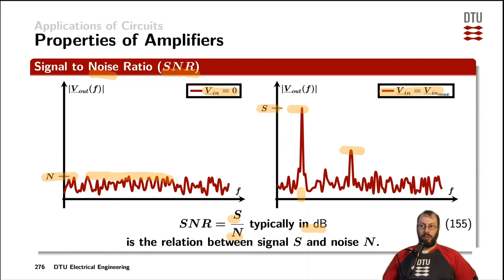You certainly also get distortion out as indicated by this peak here, but that is not taken into account into the signal-to-noise ratio performance. So the signal is simply the signal at the maximum input voltage, and the noise is the noise at the lowest input voltage. So the S and the N are not measured under the same conditions.